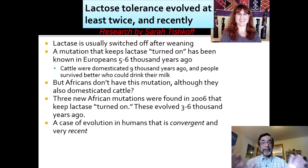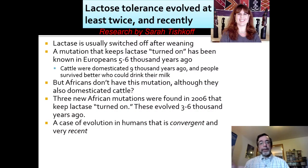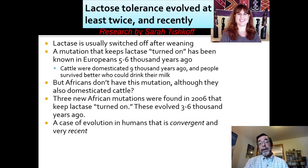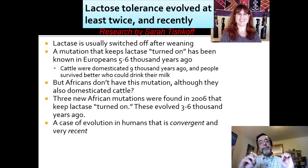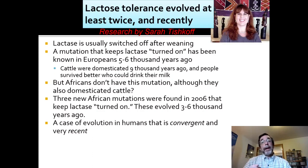It takes a couple thousand years for evolution to kick in — this is actual evolution, not epigenetics. The mutation that keeps lactase turned on in Europeans can be traced back to about 5,000 to 6,000 years ago. Africans didn't have this mutation but also domesticated cattle, so researchers searched for what other mutations Africans had. They found 3,000 to 6,000 year old mutations that also kept lactase turned on — just in a different place on the regulatory genes. Two different technical mutations but the same function: both populations converged on lactose tolerance because they had a carbon source, survived better, and reached the same solution two different ways.